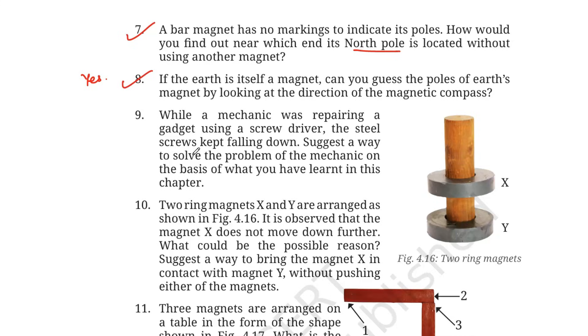Number 9. While a mechanic was repairing a gadget using a screwdriver, the steel screws kept falling down. Suggest a way to solve the problem of the mechanic on the basis of what you have learned in the chapter. Now you have learned the chapter, you have to apply yourself. The mechanic can magnetize the screwdriver because the screws keep on falling. You will magnetize the screwdriver by stroking it several times with a magnet. We did an experiment where we converted a piece of iron bar into a magnet, we magnetized it. Similarly, in this one, the mechanic can magnetize the screwdriver by stroking it several times with a magnet. This will make the screwdriver attract the steel screws, preventing them from falling.